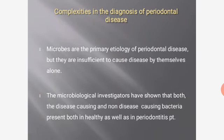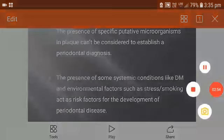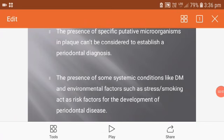Regarding complexities in the diagnosis of periodontal disease: microbes are the primary etiology but are insufficient to cause disease by themselves. Microbiological investigations have shown that both disease-causing and non-disease-causing bacteria are present in healthy as well as periodontal disease patients. Systemic conditions like diabetes mellitus and environmental factors such as stress and smoking act as risk factors for the development of periodontal disease.